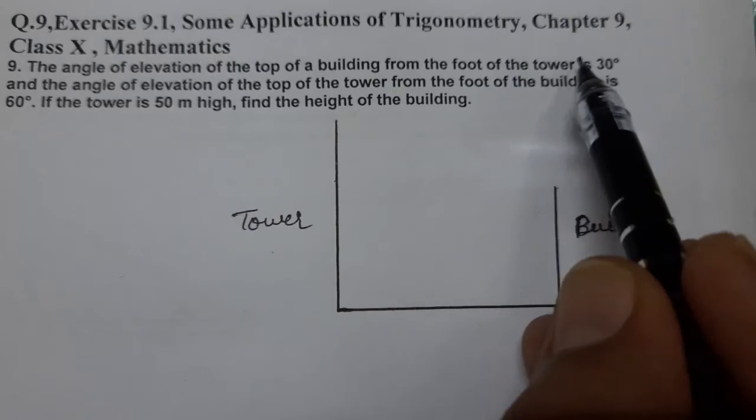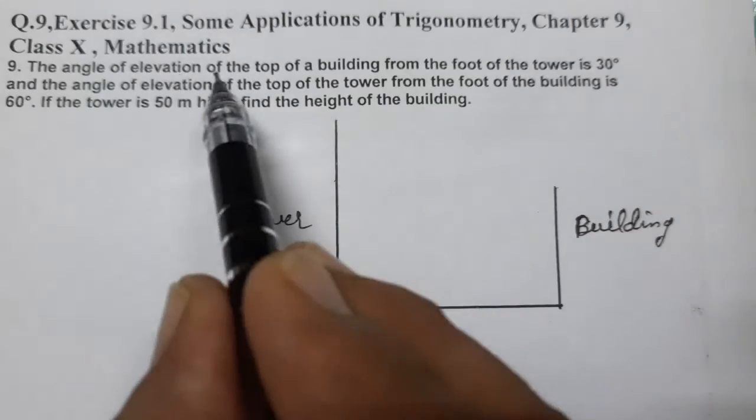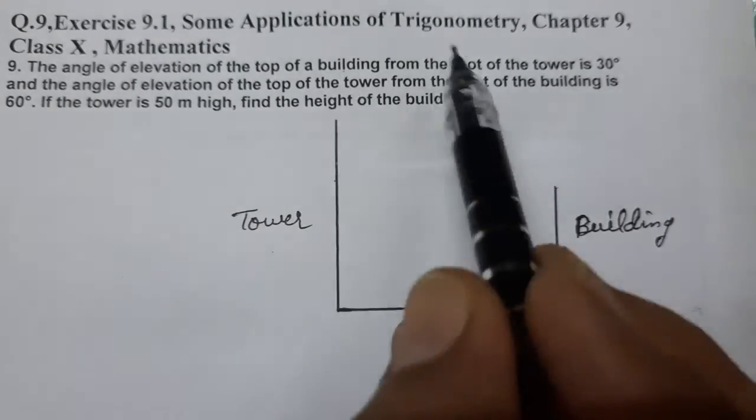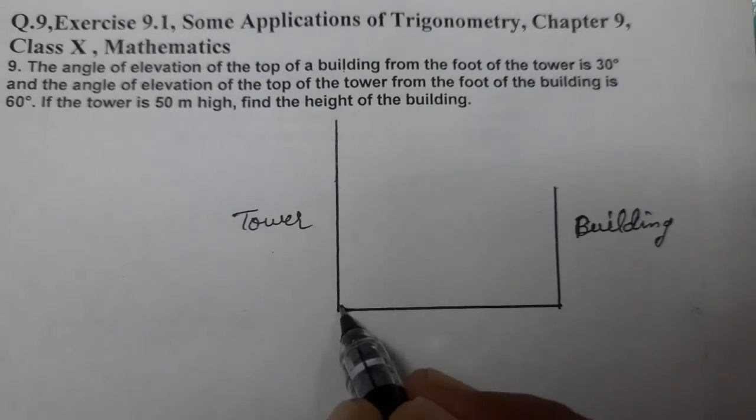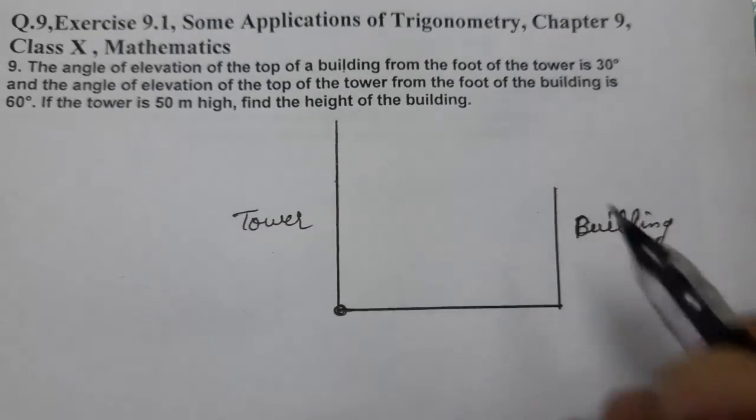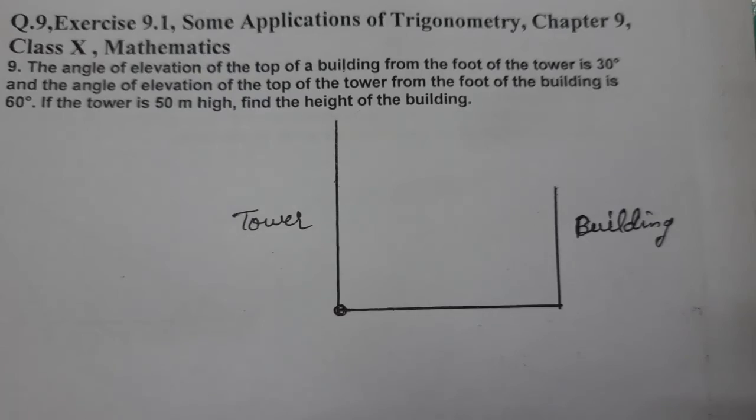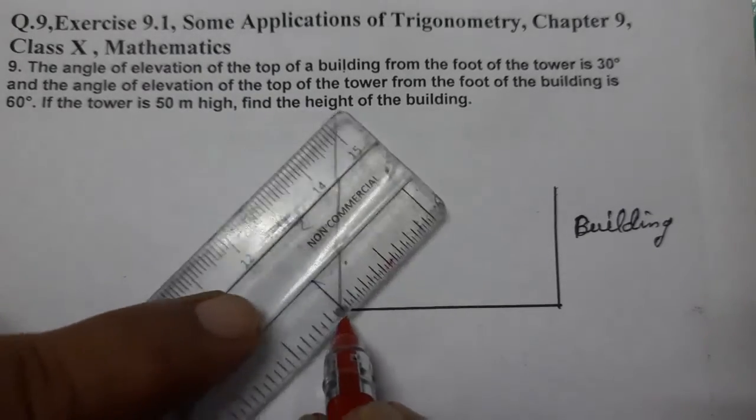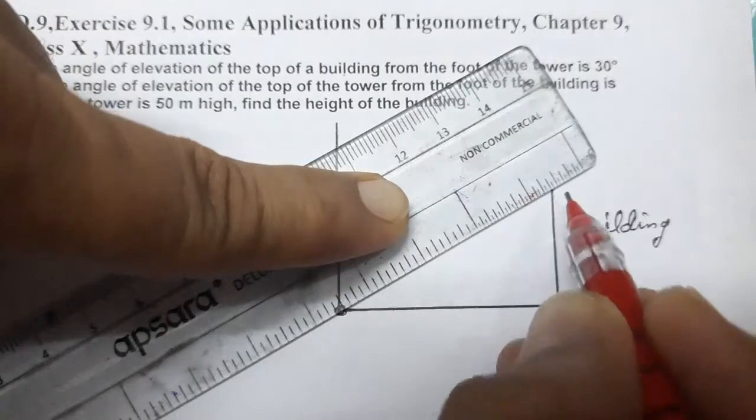From the foot of the tower is 30 degrees. The angle of elevation of the top of the building from the foot of the tower - tower ke foot se building ke top pe dekhna hai. Tower ke foot se building ke top pe. Building ke top ho gaya, tower ke foot ho gaya.